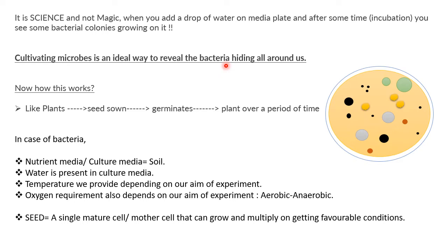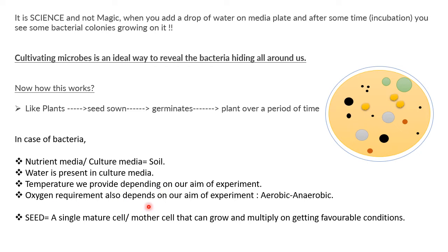Now how does this work? Let's take an example you can relate to — plants. A seed is sown in soil where it gets nutrients, water, and sunlight; it germinates and grows into a plant. Similarly, bacterial cells get converted into a bacterial colony. In the case of bacteria, the nutrient medium or culture medium equals soil; water is present in the culture media; and temperature is provided by the incubator depending on our aim.